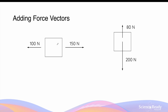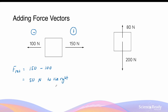Before adding force vectors, it is important to define the positive direction and also the negative direction. Typically, the right-hand side is represented by the positive direction and the left-hand side by the negative direction. So in this case, the net force is given by positive 150N minus 100N, and this gives a net force of 50N to the right. The direction is to the right because the final answer is positive 50, and the positive sign indicates that the net force is going to the right.